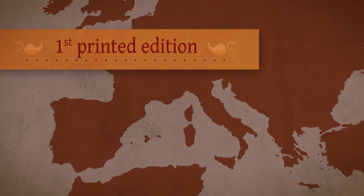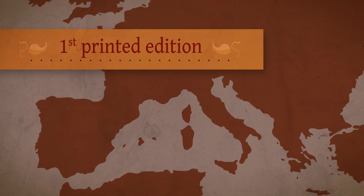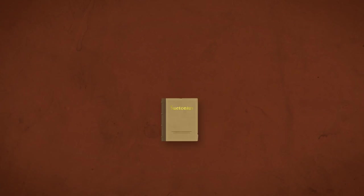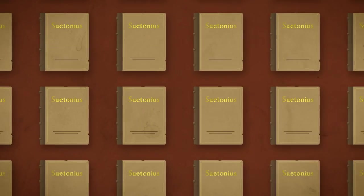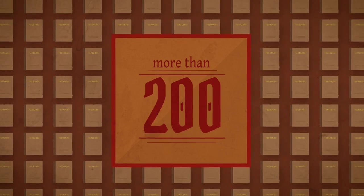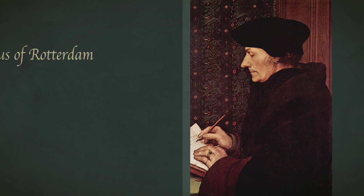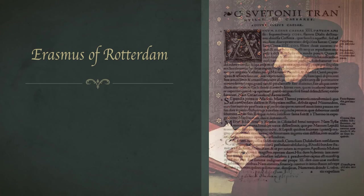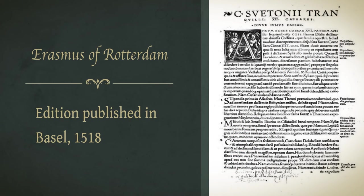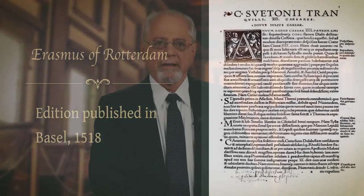Beyond information from antiquity or the Middle Ages, there's also the sequence of editions produced in Europe since the year 1470, when the first printed edition of Suetonius' works was issued in Rome. There's been a long line of such editions — more than 200 of them — some made by very famous scholars, including Erasmus of Rotterdam, who produced an edition published in Basel in 1518. Any editor working on the text today must take these earlier editions and the judgments they represent into account.